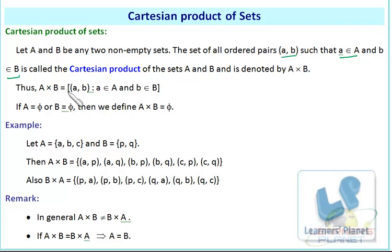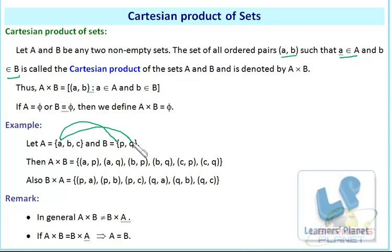A cross B is the set of ordered pairs where the first element belongs to A and the second belongs to B. If either A or B is empty, then A cross B is the null set. For example, if A equals {A, B, C} and B equals {P, Q}, then A cross B gives pairs: AP, AQ, BP, BQ, CP, CQ. And B cross A gives PA, PB, PC, QA, QB, QC.